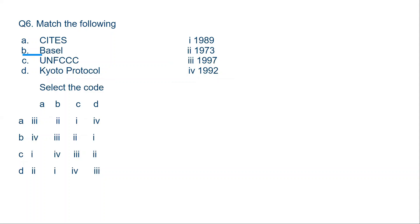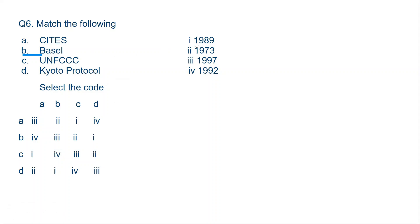Question 6. Match the following sites. CITES stands for Convention on International Trade in Endangered Species. We know that UNFCCC happened in 1992, so C matches with 4. We know Kyoto Protocol happened in 1997, so D matches with 3 — and D is the correct option. Basel Convention B matches with 1, which is 1989, as it dealt with hazardous waste. CITES convention, A, matches with 2, which is 1973, right after the United Nations Conference on the Human Environment. CITES was established to protect biodiversity and prevent trade of endangered species.